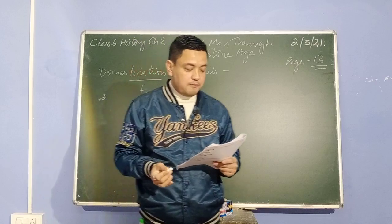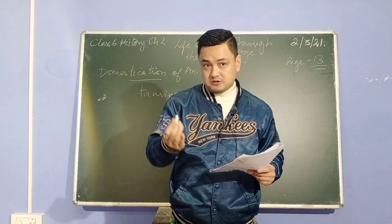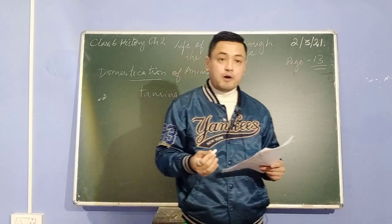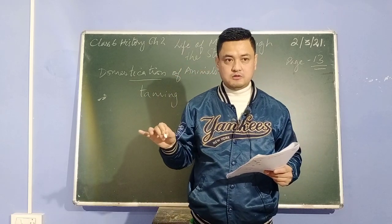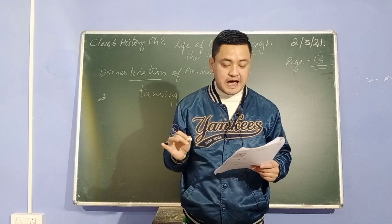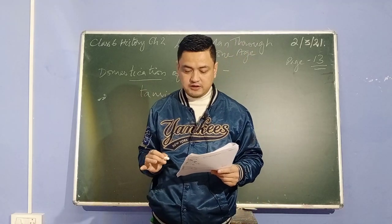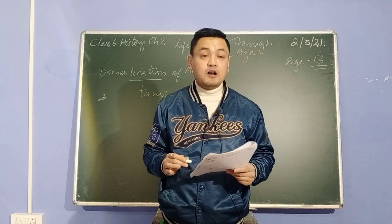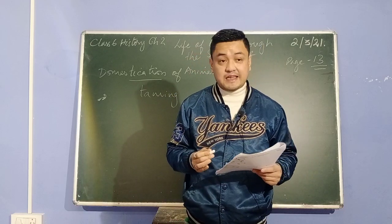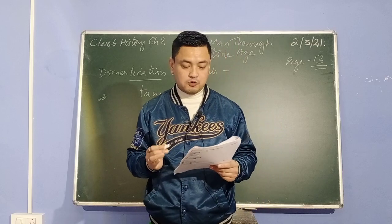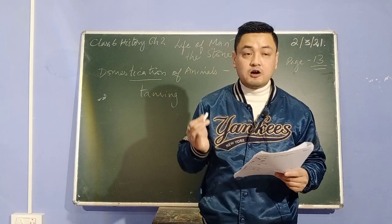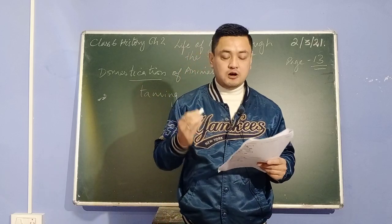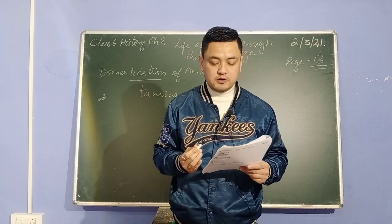In the Neolithic age, man learned to tame animals. The dog was probably the first animal to be tamed. In the course of time, man began to keep other kinds of animals also, like wild pigs, sheep, goat, horses, donkeys, and cattle.